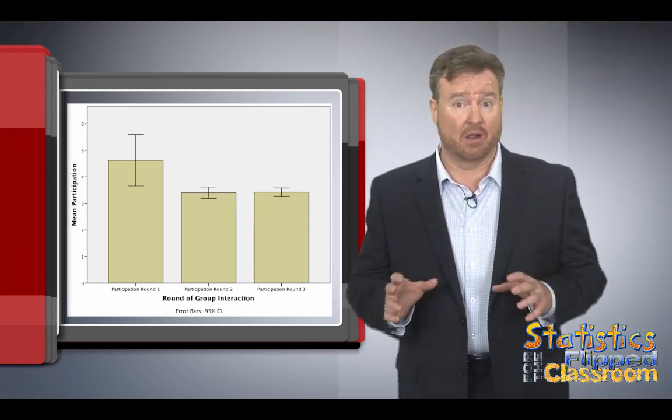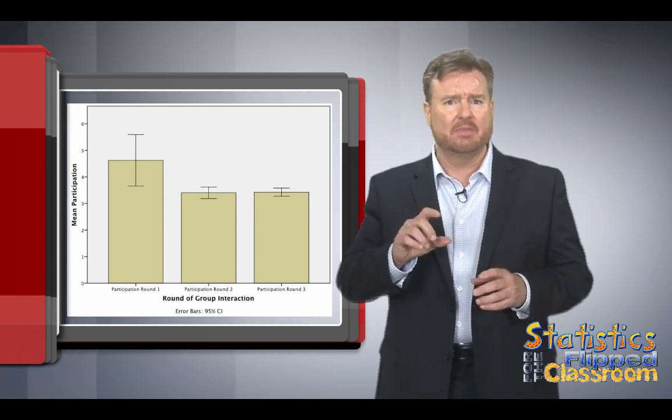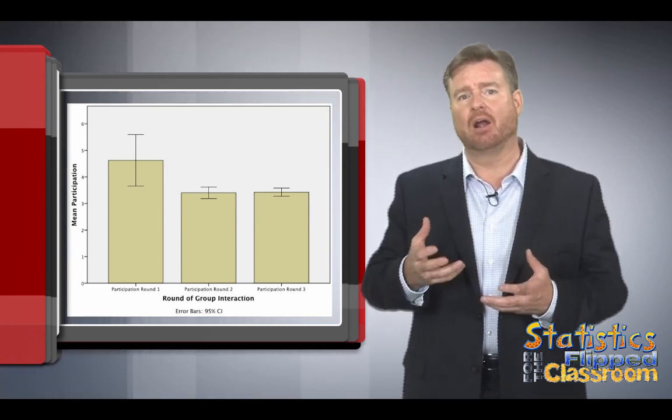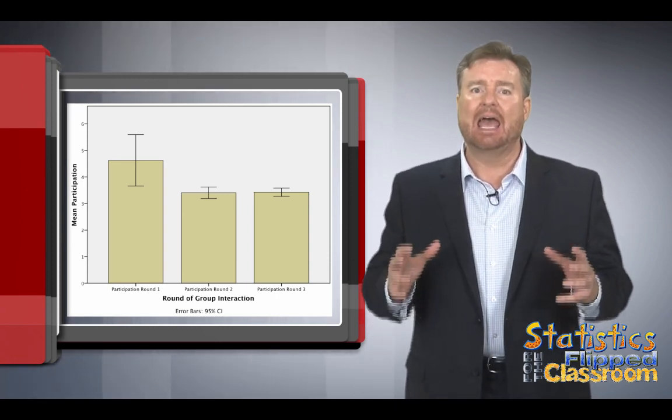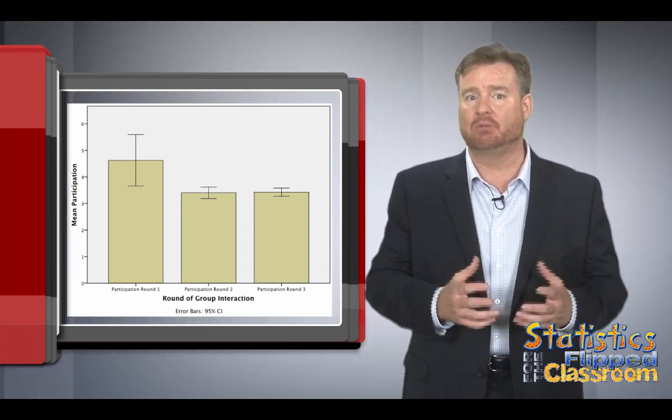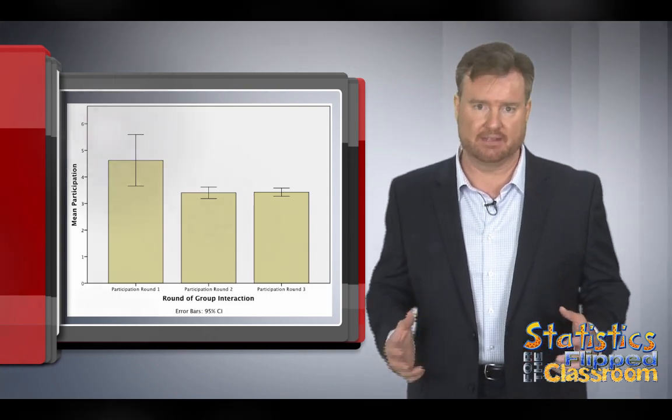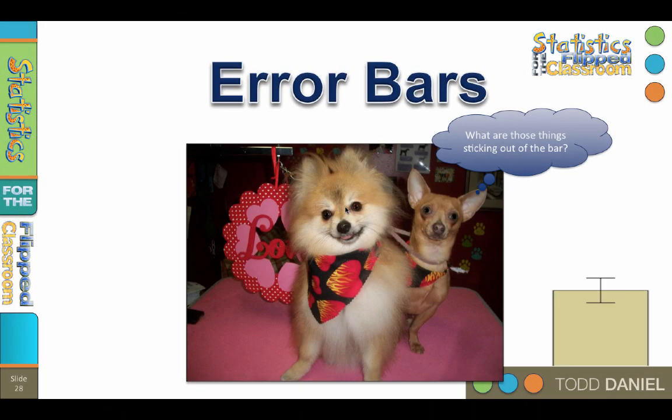Now the error bar looks like a little I-beam that sticks out from the main bar, and it measures how much error is around the mean, and that tells us how reliably the mean represents the rest of our data. So let's figure out what's going on with those little things sticking out of the bar.